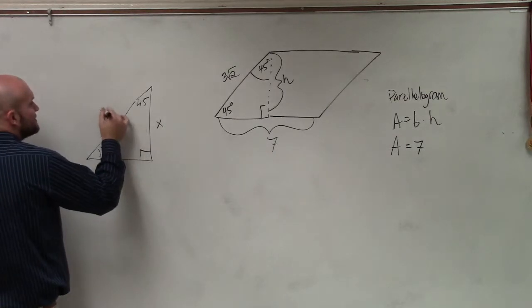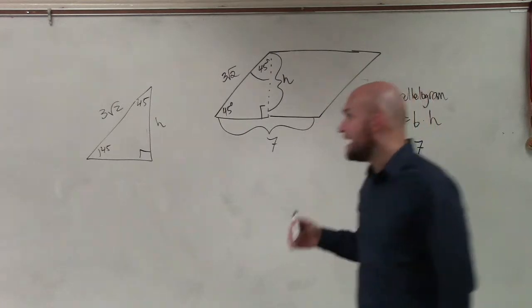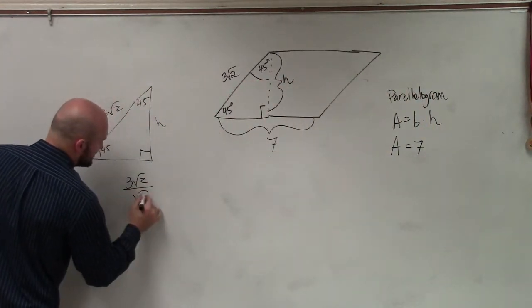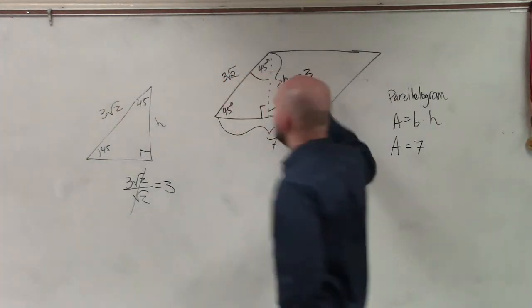So in this case, what we have is 3 square root of 2, and we want to find out H. So to do that, we take 3 square root of 2 divided by the square root of 2. So H equals 3.